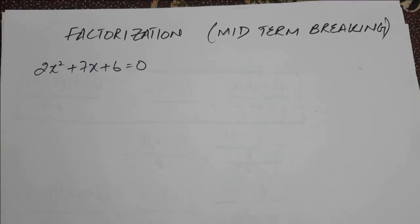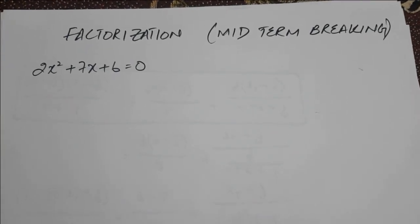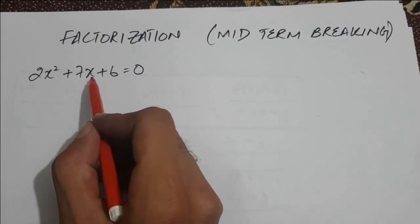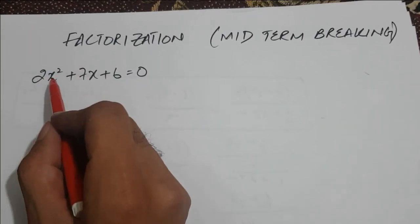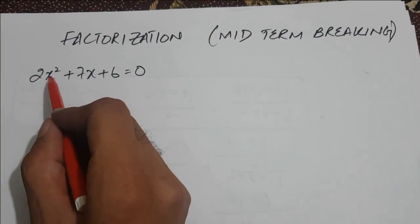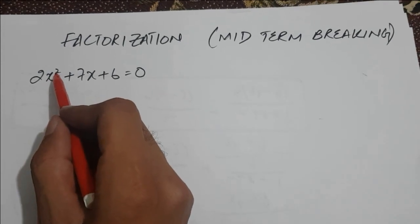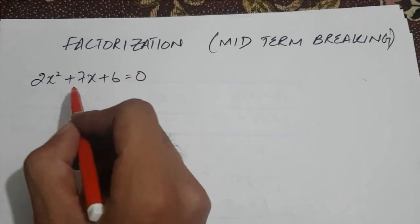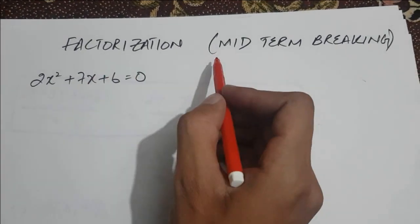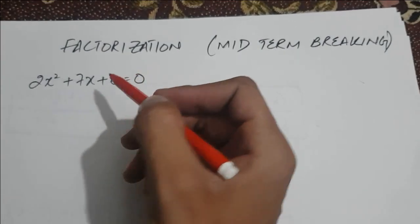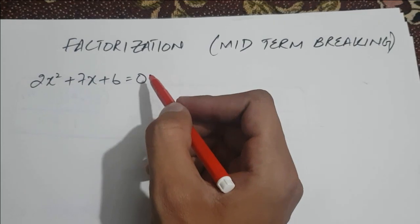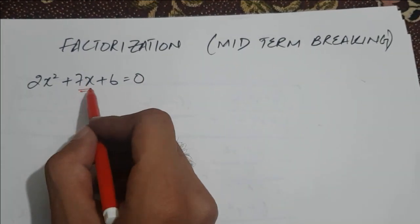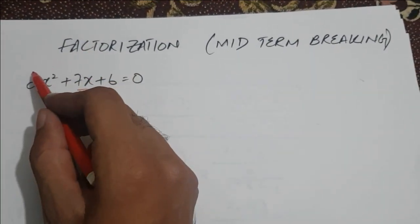Hi everybody, today I am going to teach you the factorization process of a quadratic equation. This is a quadratic equation having degree 2, which is the highest power of the variable involved. We have to factorize it by the midterm breaking process, mainly known as factorization. This is our midterm 7x.